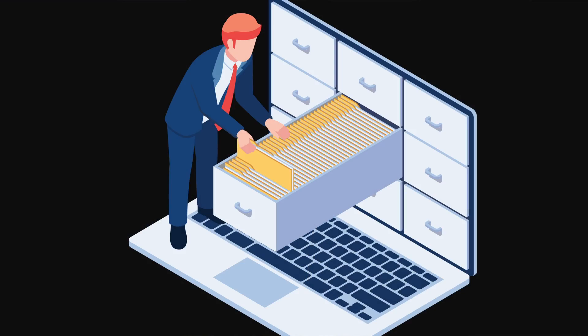I think a useful analogy for this is to think of a filing cabinet. Each drawer of that filing cabinet is a taxonomy and within it are a bunch of file folders. Those file folders are all of your terms. And within those terms, you have individual posts. Think of these as the individual papers inside those filing folders.